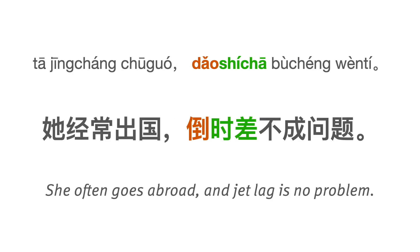Another example: 她经常出国，倒时差不成问题。 不成问题 literally means 'it will not become a problem' — in this case, it means 'it's no problem.' 倒时差不成问题: she has no problem adjusting to the new time zone. She has no problem with the jet lag.